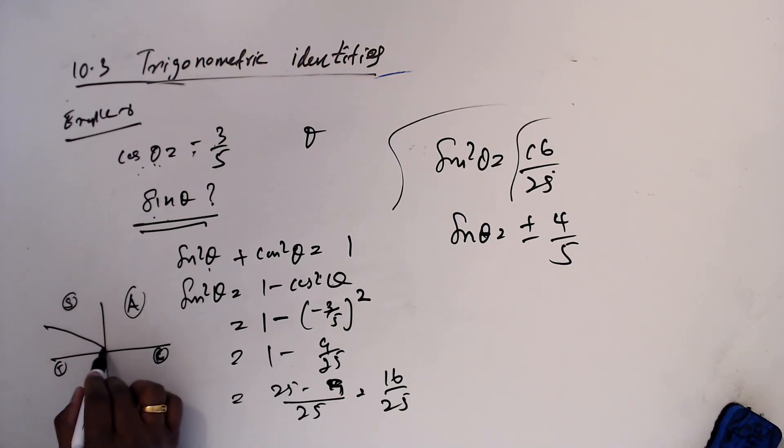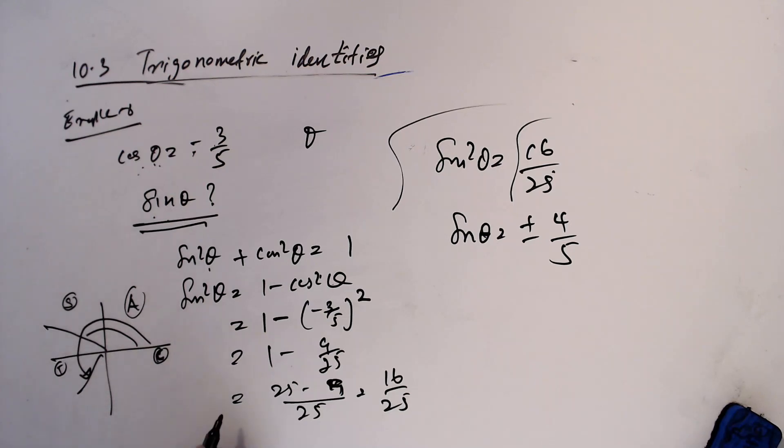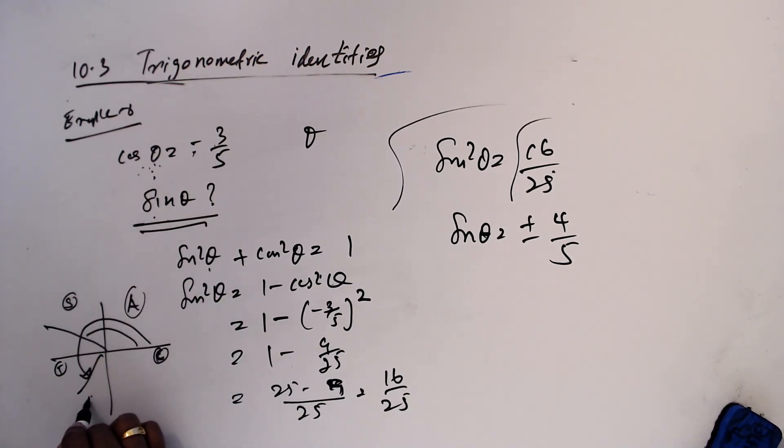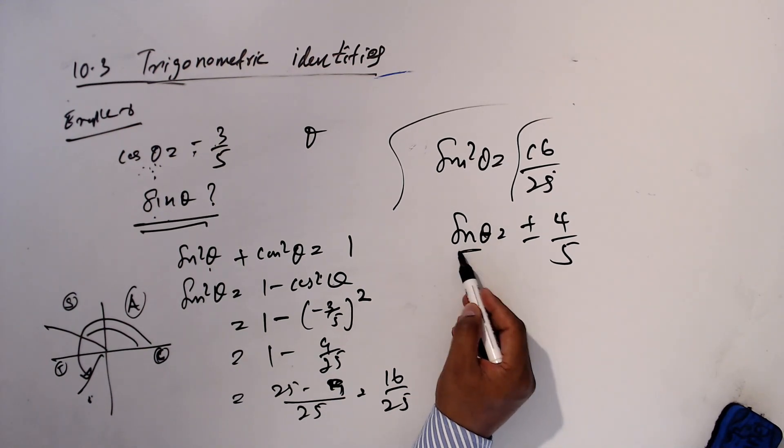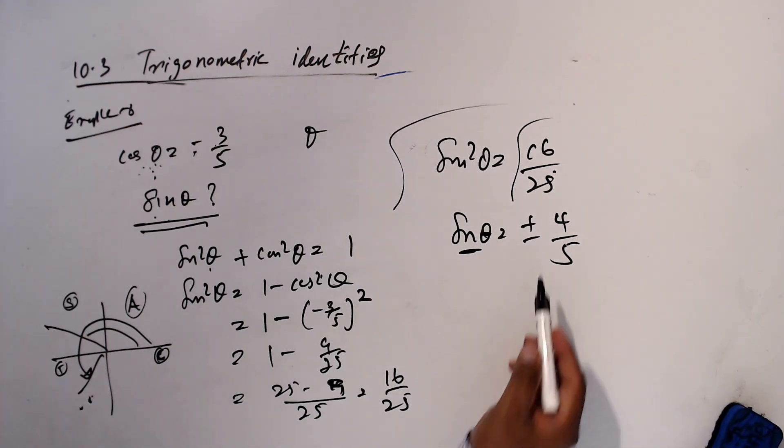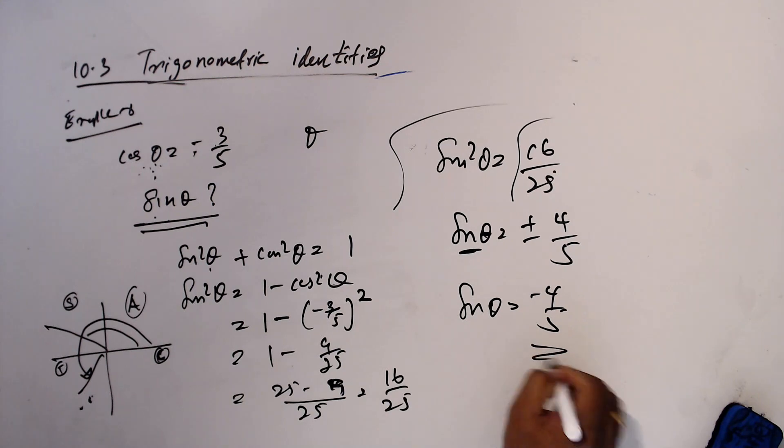In the sum, it is clearly given that theta is what? Reflex. This means it is in a third quadrant. Third quadrant sine value is what now? Negative. Third quadrant sine is negative. Hence, we have to select minus 4 over 5, not positive.